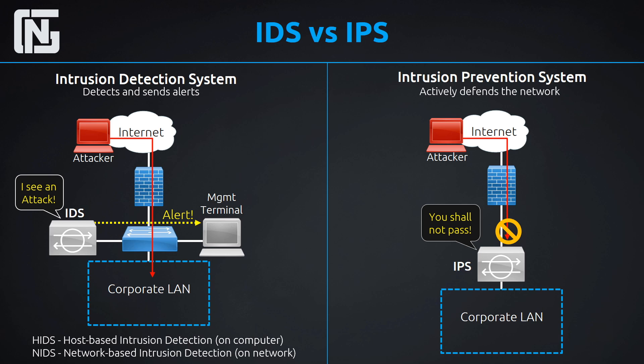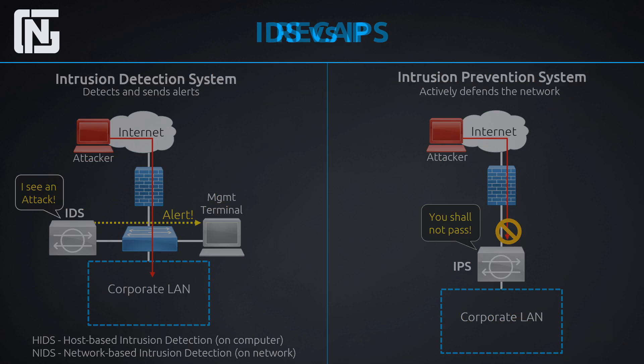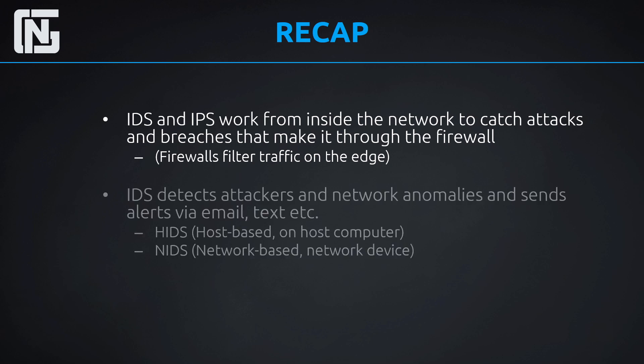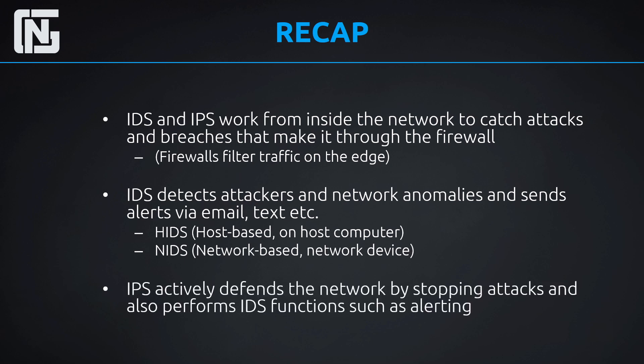Recap: IDS and IPS work from inside the network behind our firewall, there to catch things the firewall does not detect. Rather than filtering on the network edge like a firewall, IDS and IPS sit behind the firewall on the inside of the network. The IDS detects attackers and network anomalies and sends alerts via email or text — with two types: host-based and network-based. The IPS adds additional security by actively defending the network and stopping attacks.